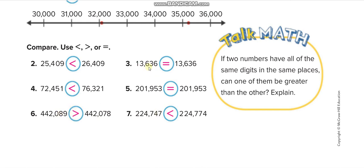We already solved thirteen thousand six hundred. For the next one, two hundred and one — those are equal. And two hundred twenty-four thousand seven hundred seventy-four: seven is greater than four, so that number is greater. Let's move to the next page.